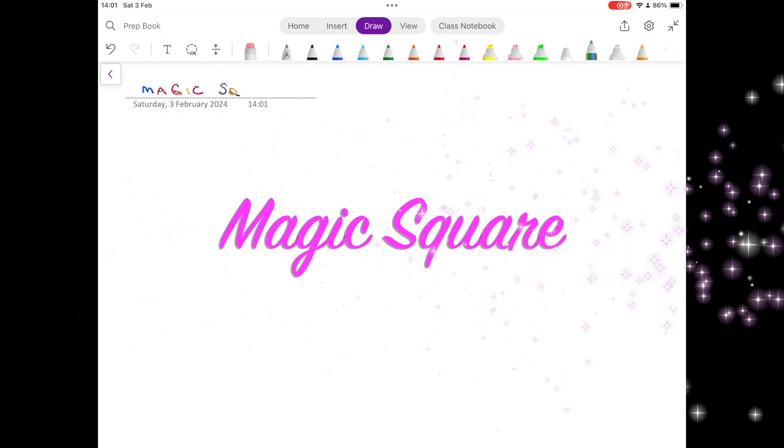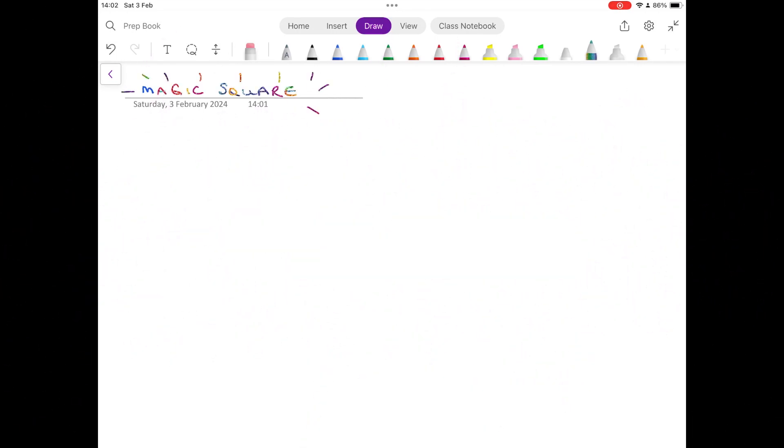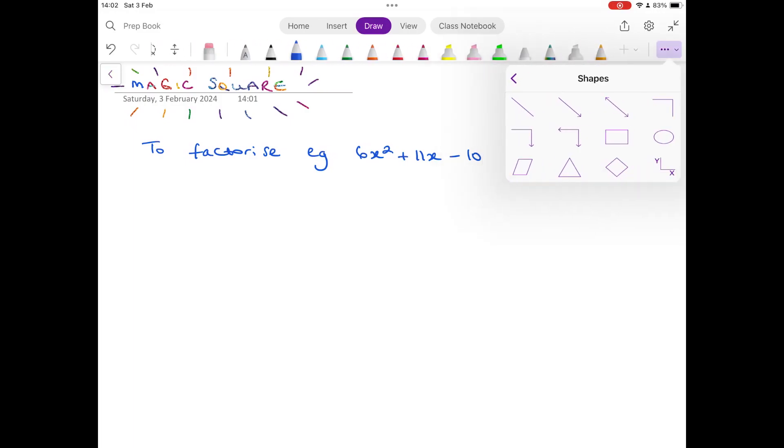Here is a short video to show you how to use the magic square to factorize a quadratic where the number in front of x squared is more than one. So for example, 6x squared plus 11x minus 10.